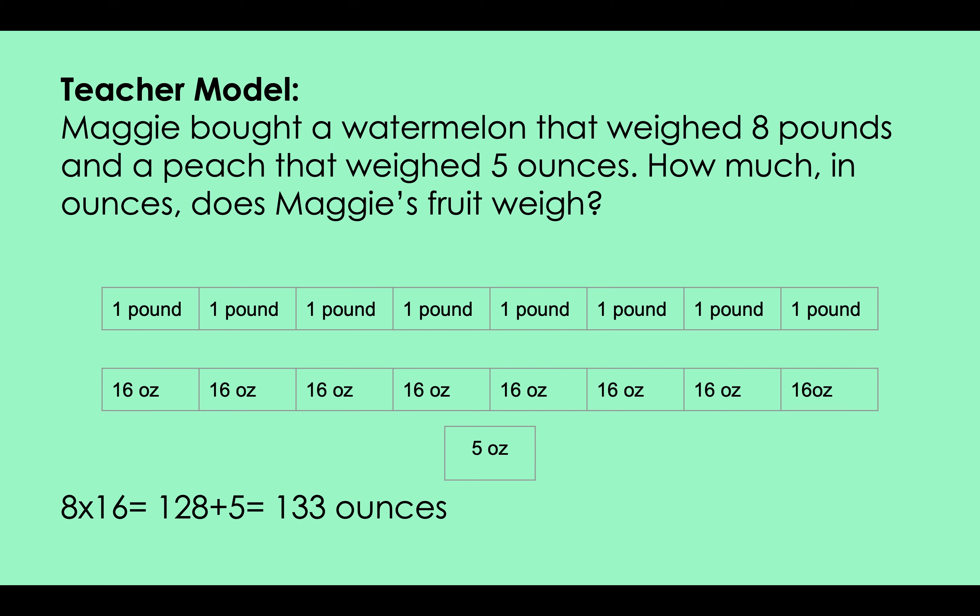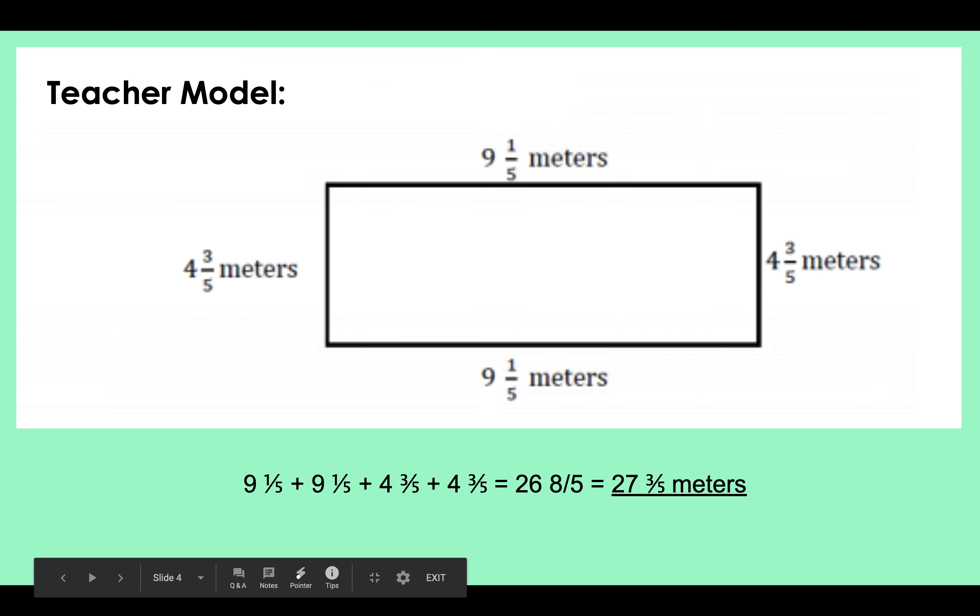So eight times 16 equals 128 plus five is 133 ounces. That's how much her fruit weighs. So first you need to convert and then you need to add. Convert just means to change.